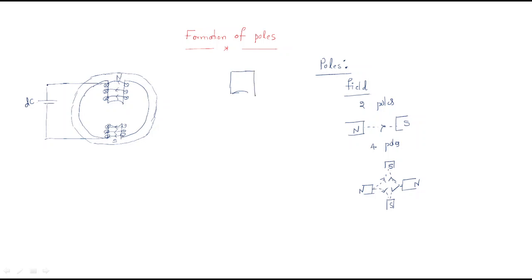The winding connection arrangement is like this — the wire is wound around the pole in a specific direction. By using the right-hand thumb rule, we can determine the direction of the magnetic flux produced.